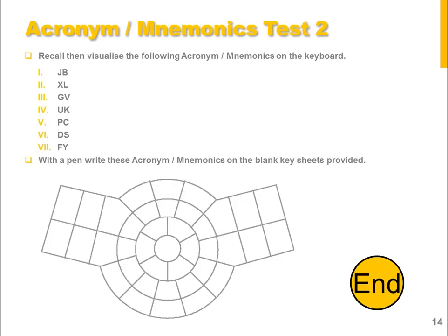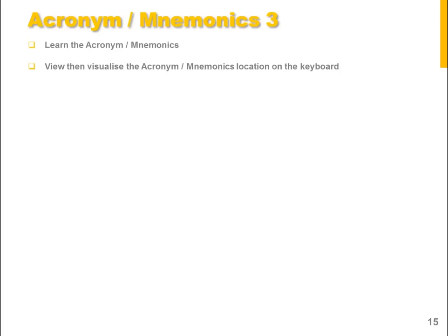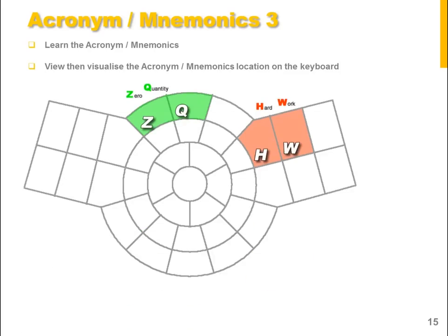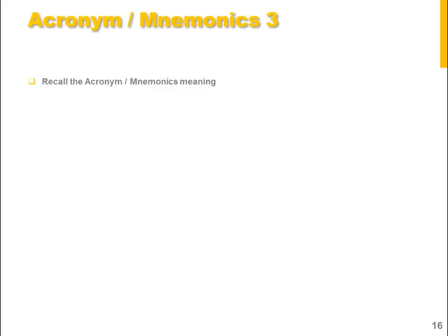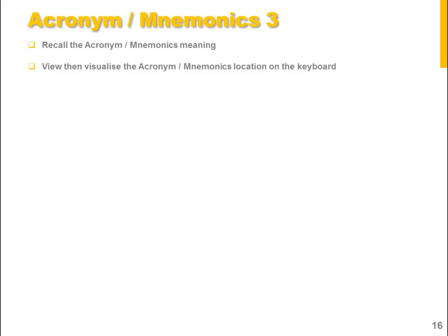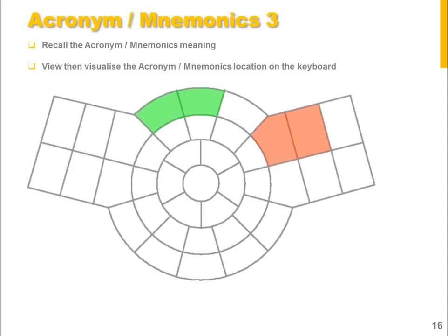Moving on to our third set of acronyms and mnemonics. Again, learn the acronym or mnemonic, view then visualize their location on the keyboard. So we have here two sets: ZQ — Zero Quantity, HW — Hard Work. Look exactly where they are located on the keyboard itself. The green area represents ZQ — Zero Quantity, and the red area HW — Hard Work.